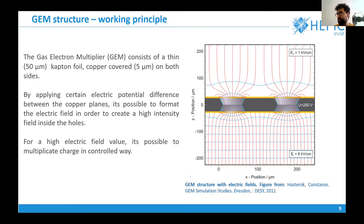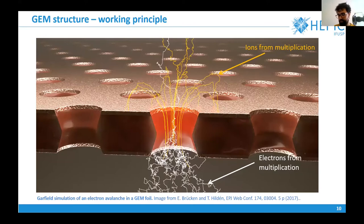Here is the working principle of the GEM. As Tiago already showed us, we apply a difference of electro potential between the two copper layers here. It generates this kind of field, this red field, and it enables us to allow electronic multiplication inside these holes. Here we have a Garfield simulation of multiplication. We have here this track, this one white track is one electron and it's multiplied inside the hole.